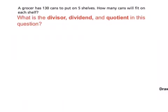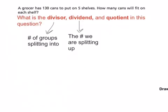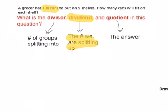So if you remember, the divisor would be how many groups we're splitting into. The dividend would be the number that we're splitting up. And the quotient would be the solution to our division equation. So the first question that I ask myself is, what is the dividend? In other words, what number are we splitting up? And if you see we have 130 cans that we are splitting into five shelves, that means that our dividend is 130. We are splitting those cans between five shelves. So that means that we are splitting them into five groups. Which means that five is our divisor.